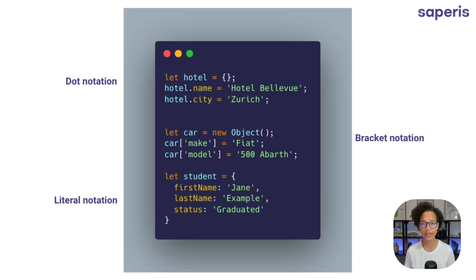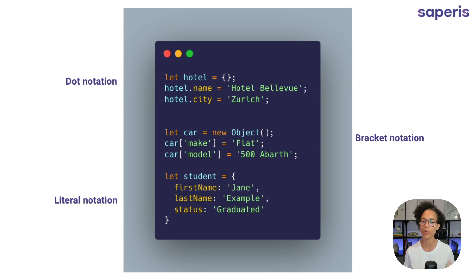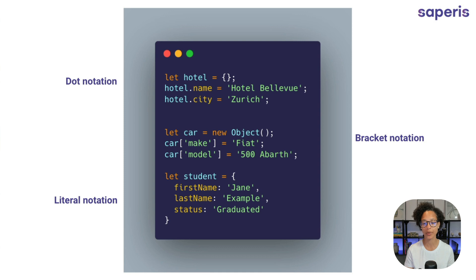Here we see three different ways how we can create an object and assign properties. The first uses dot notation — we first create our hotel object using curly brackets, and then with dot notation we create properties on the object and assign a value. So we're saying the value of Hotel Bellevue is stored in the name property of the object hotel. In the middle we see the bracket notation — we use new Object to create an empty object, then use bracket notation where the property name is in quotation marks, assigning, for example, the value fiat to the property make.